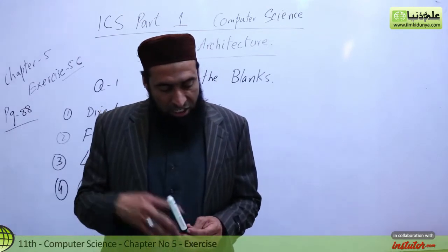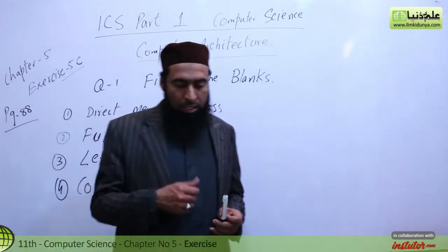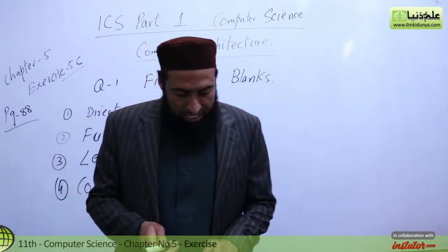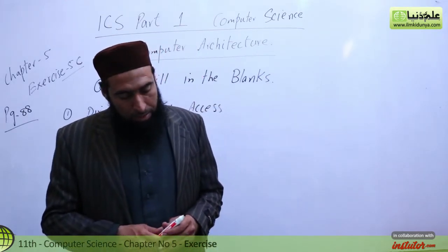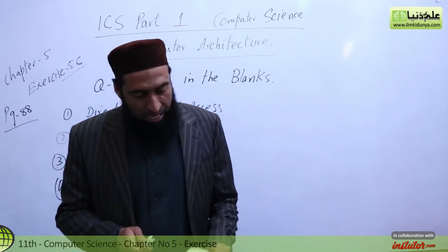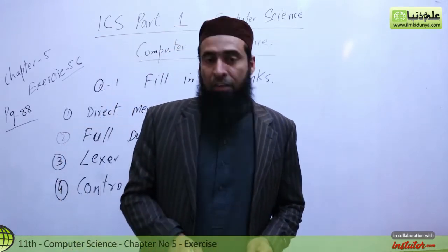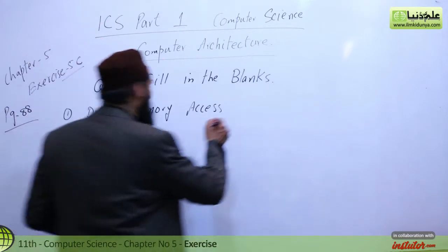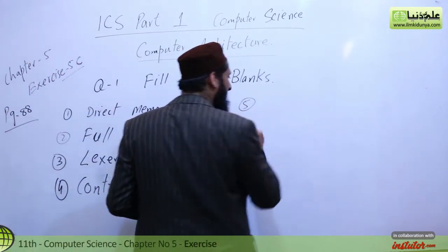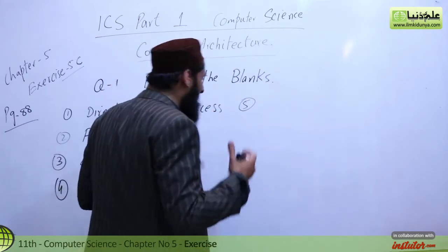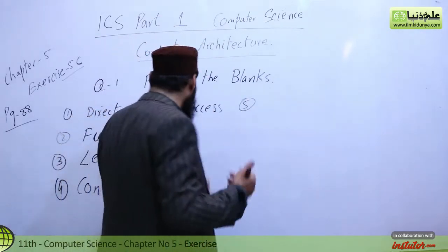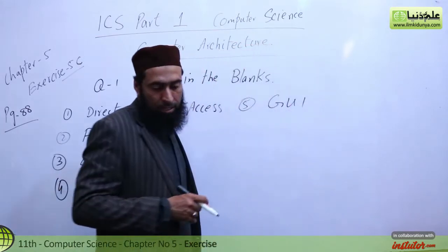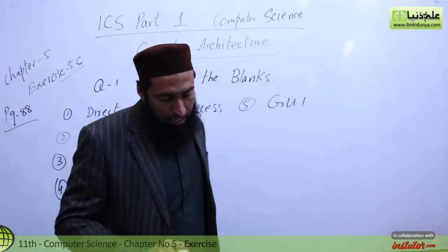Number 4: From the memory, the control unit fetches and decodes instructions. Number 5: The interface consists of windows, menus, icons and pointers — the Graphical User Interface. GUI includes windows, icons, and desktop items.